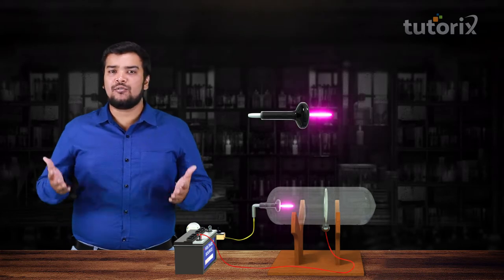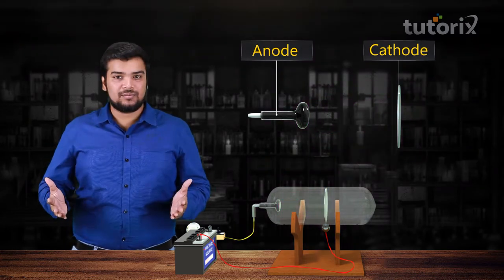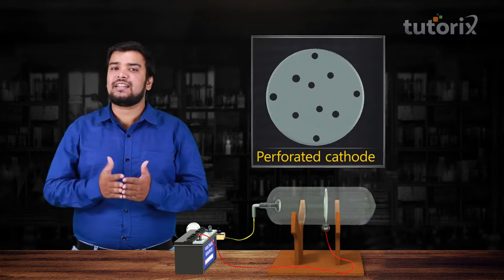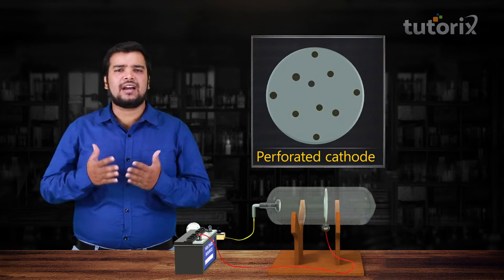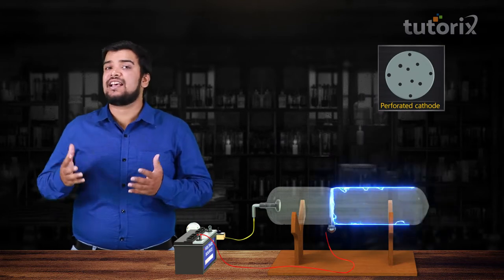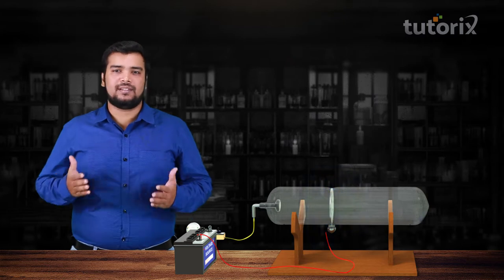Since these particles would originate from the anode, they must be visible behind the cathode. To see this clearly, Goldstein used a perforated cathode. Now, a perforated cathode is simply a cathode with holes in it. He modified the tube by adding another gas chamber and placing this perforated cathode in the middle of it.